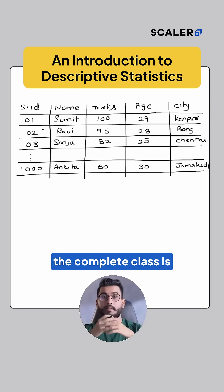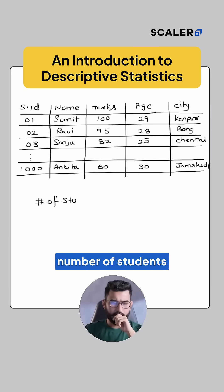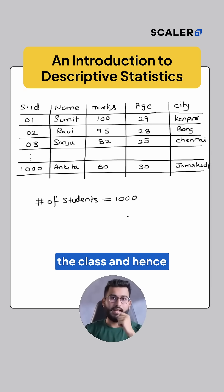That is what descriptive statistics is. For example, I can say that this particular class is having number of students as, let's say, a thousand. Now this is a statistic which is describing the class, and hence a descriptive statistic.